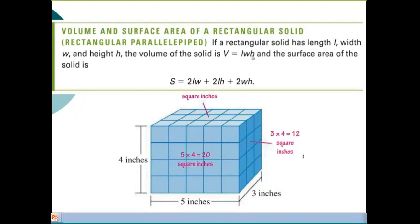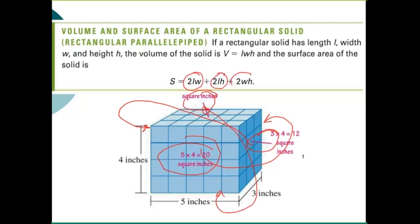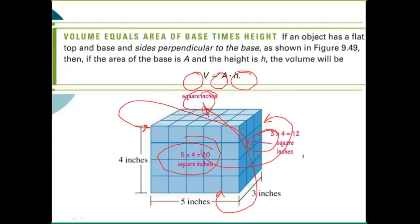The volume formula is length times width times height. The surface area formula is longer: you have two of each face — front and back, left and right, top and bottom — so it's 2(lw) + 2(lh) + 2(wh). Each pair gives you length times width, length times height, and width times height, and having two of each gives you the overall surface area.